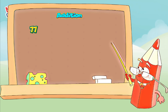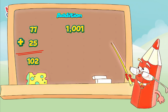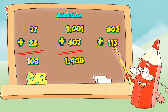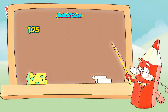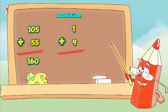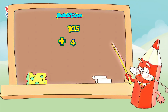77 plus 25 is equal to 102. 1,001 plus 407 is equal to 1,408. 603 plus 113 is equal to 716. 105 plus 55 is equal to 160. 1 plus 9 is equal to 10. 23 plus 27 is equal to 50. 105 plus 41 is equal to 146.